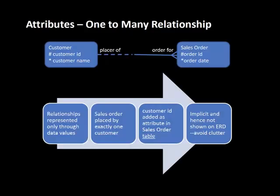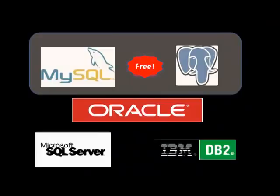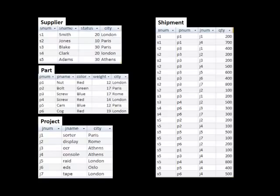Therefore, on the diagram we can draw a line indicating that a sales order is placed by one customer. But in the database — because it's a relational database — the only way the relationship can be represented is by putting a data value. Since a sales order can have only one customer, the easiest way is to take the customer's ID and put it in the sales order.